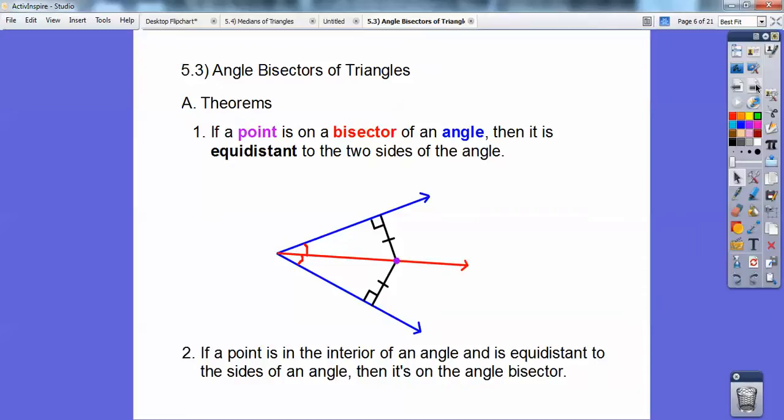Alright, and this is vice versa. If it's equidistant, if a point's inside of here and it's equidistant to the sides of the angle, then it must be on the angle bisector.